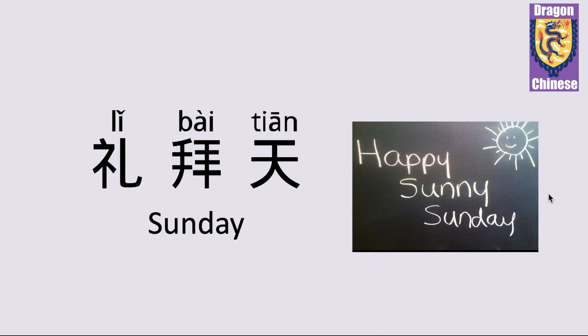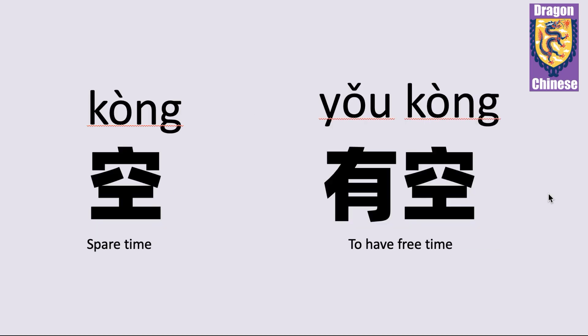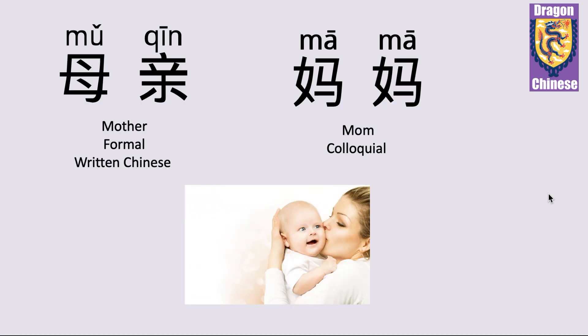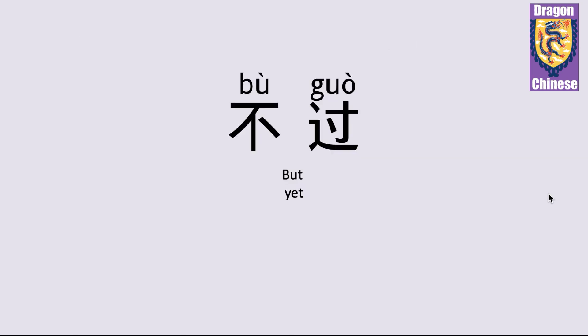礼拜天 — Sunday. 空 — spare time. 有空 — to have free time, to have spare time. 母亲 — mother; 母亲 is a formal word often used in written Chinese.